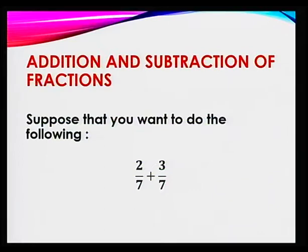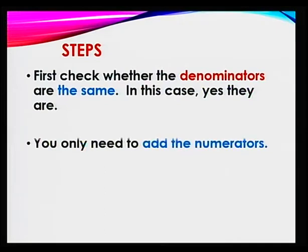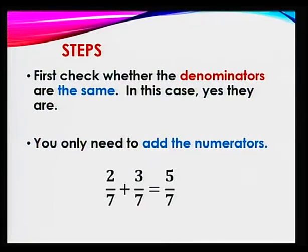To start with, we shall see the addition and subtraction of fractions. Suppose that you have 2 over 7 plus 3 over 7. How do you tackle that? The first thing you need to do is check whether the denominators are the same. In our case, they are. So you only need to add the numerators. That is, 2 over 7 plus 3 over 7, which is 5 over 7. So that's easy.